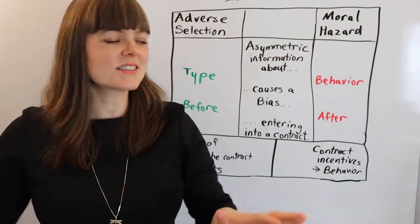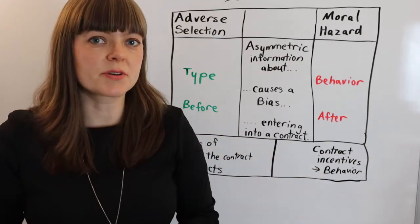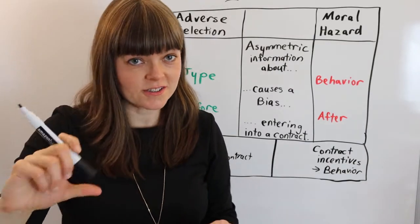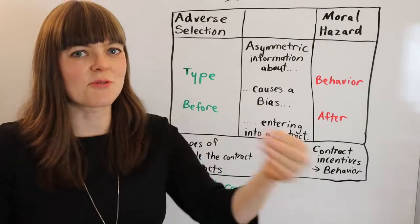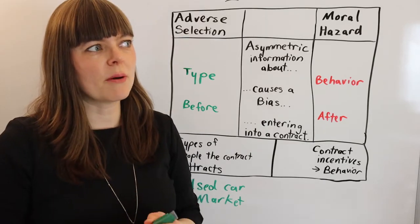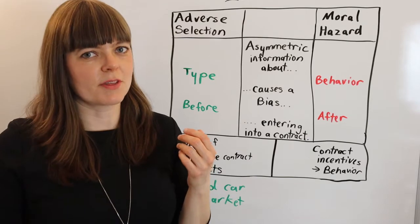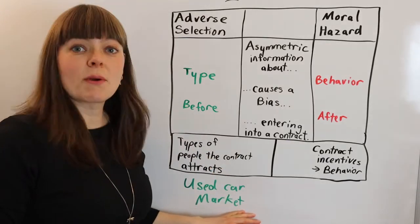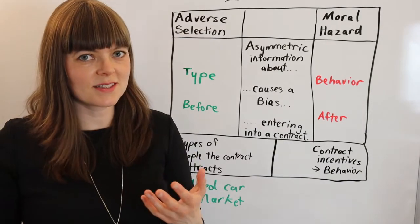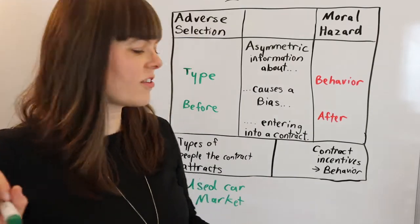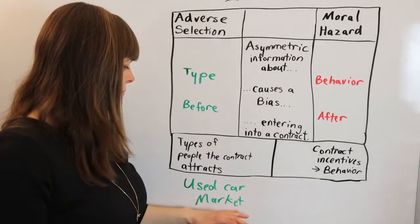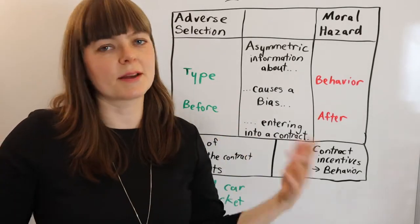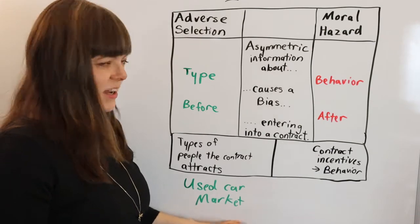The classic example of adverse selection is the lemon market for used cars. In the used car market, the type of person attracted to sell their car is someone who's probably no longer happy with it — maybe because something is wrong with it, they expect it to break down soon, or they're annoyed with some feature. So if the contract is signing at the used car lot, the type of person attracted to sell is biased toward having cars that are about to break down or have some other problem. That's the classic example of adverse selection.